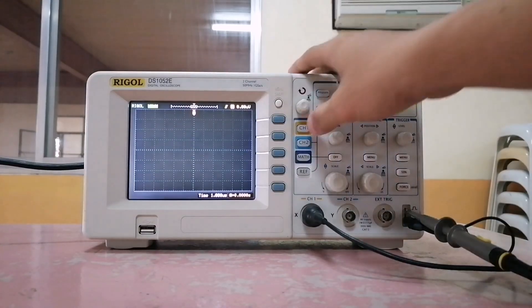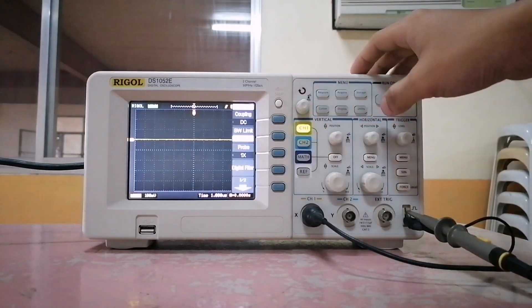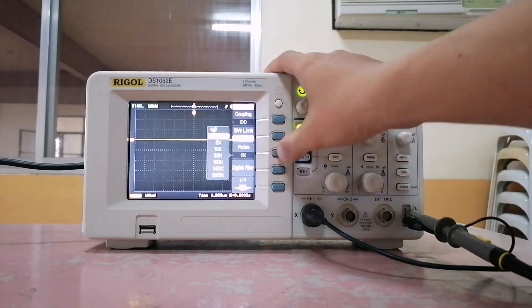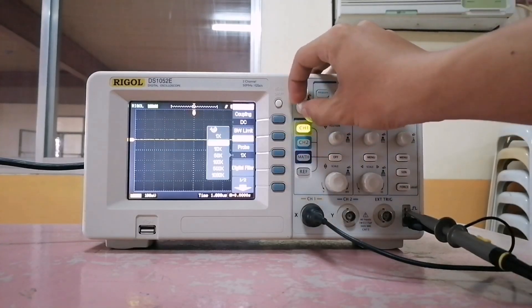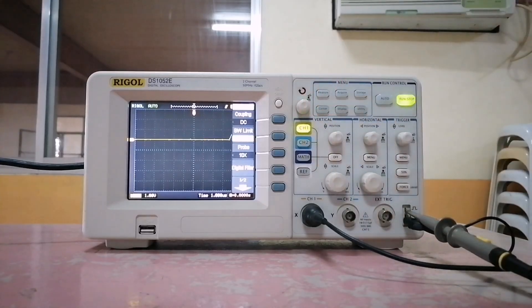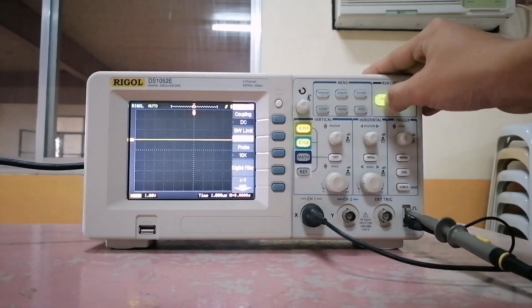Now, select channel 1. Then, click on probe and select 10x. Then, click auto to display the input.